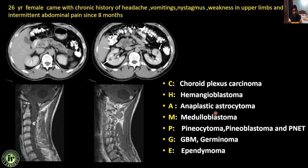I want to share a mnemonic I have framed to remember all causes of drop metastasis: CHAMPAGNE — C for Choroid plexus carcinoma, H for Hemangioblastoma, A for Anaplastic astrocytoma, M for Medulloblastoma, P for Pineocytoma, pineoblastoma, or pineal tumors, G for GBM or Germinoma, E for Ependymoma.